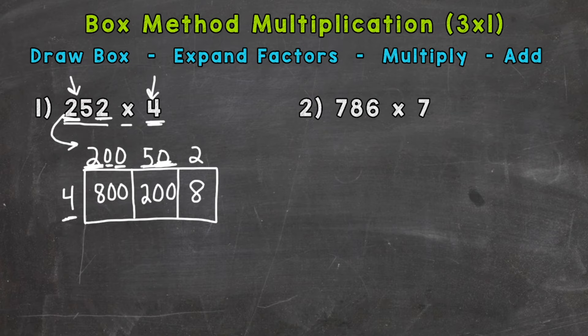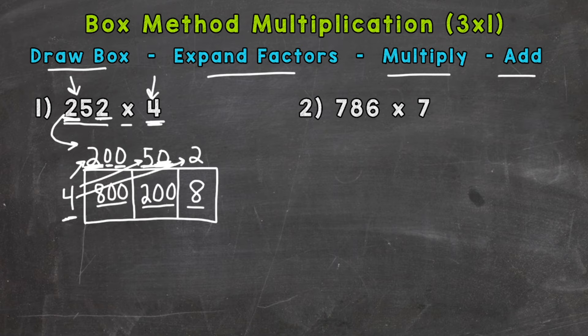So to recap, we did 4 times 200, which is in this box, then 4 times 50, which is in this box here, and then 4 times 2, which is 8. So once we have that, we drew our box, we expanded the factors, we multiplied, now we end with adding.